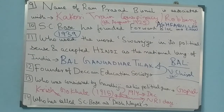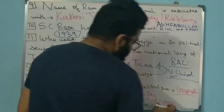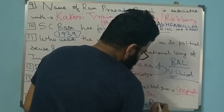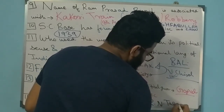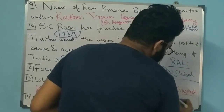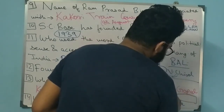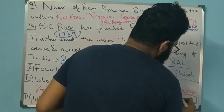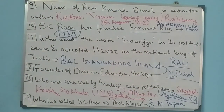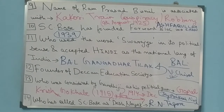Question 13: Who called Subhas Chandra Bose 'Desh Nayak'? The title 'Desh Nayak' was given to Subhas Chandra Bose by Rabindranath Tagore. Also note: the title 'Lok Nayak' was given to Jai Prakash Narayan.